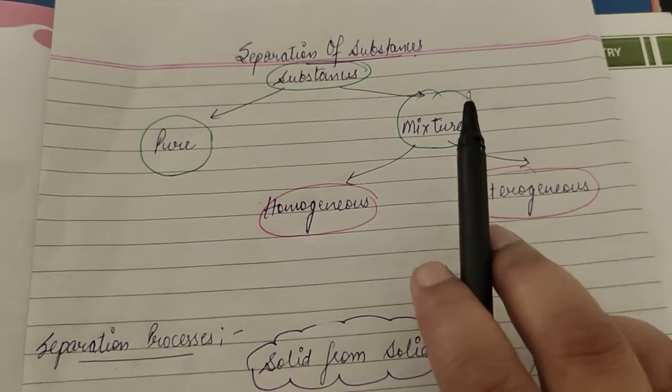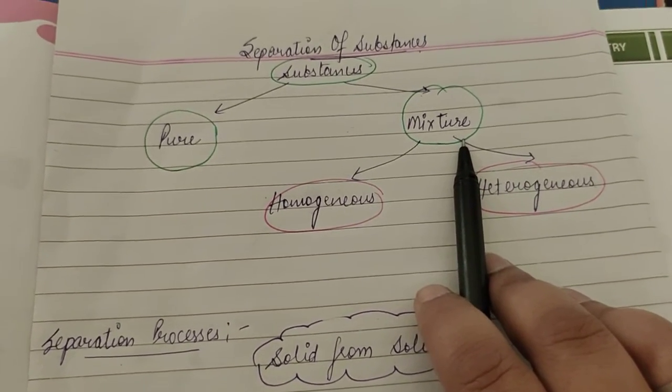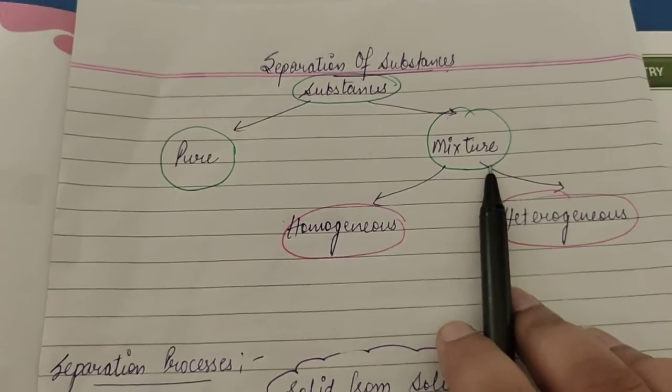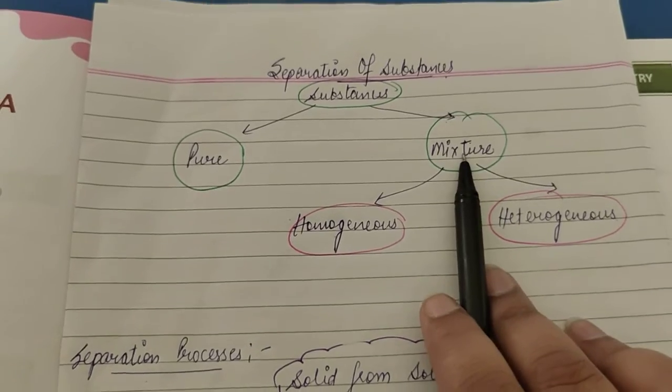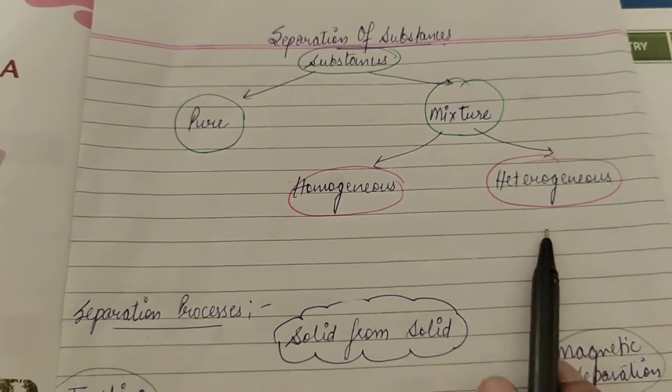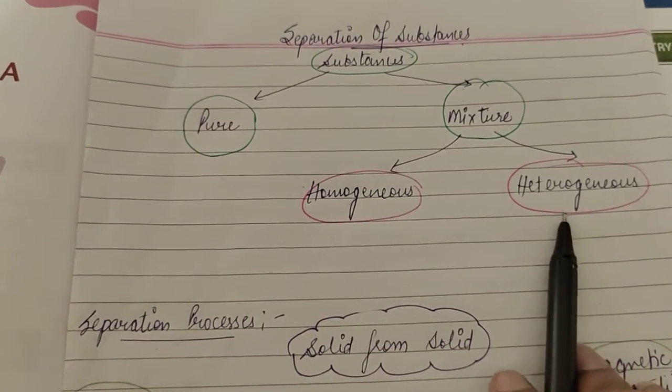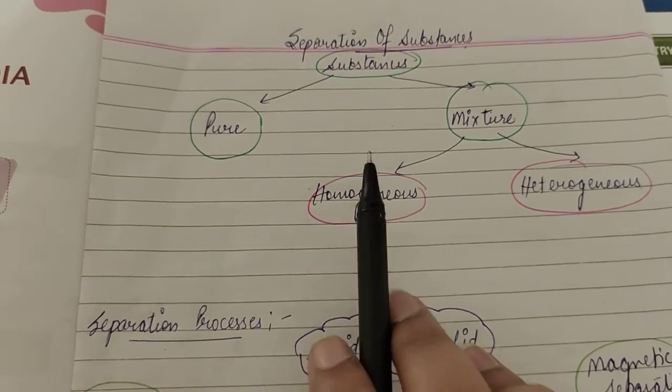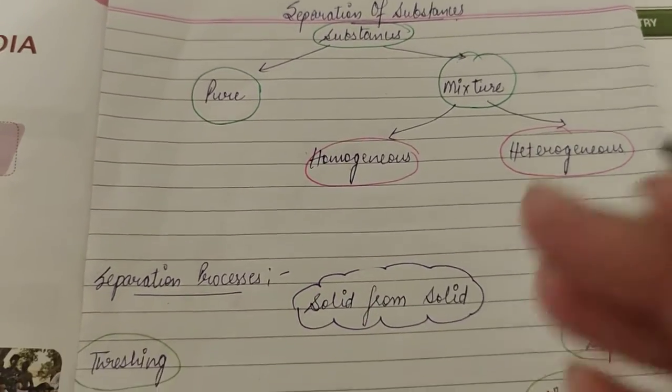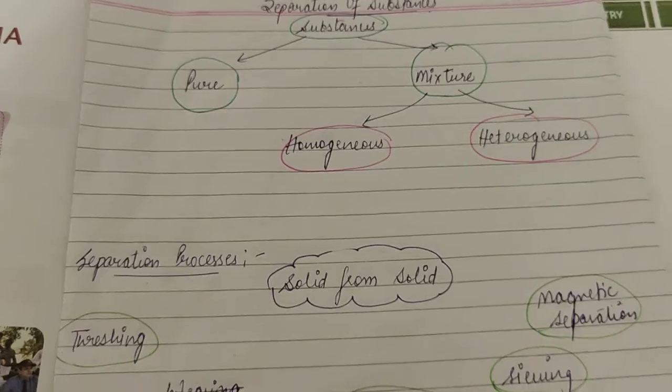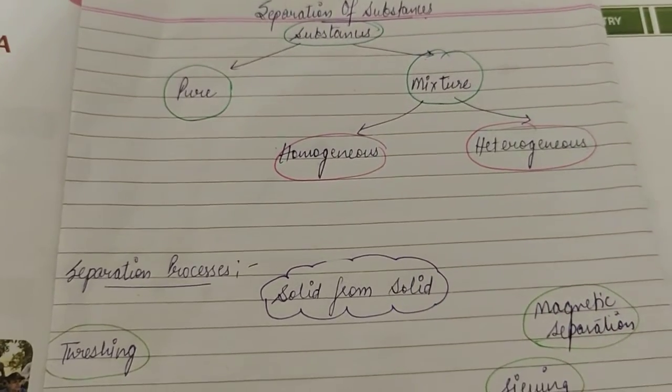But if a substance is present in the mixture form, then it needs to be separated. In the mixture form, there are two types of mixtures: homogeneous and heterogeneous. Homogeneous mixture is the mixture in which its components get completely dissolved in each other, means you can't identify between the components.